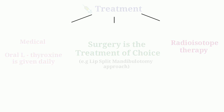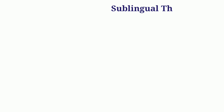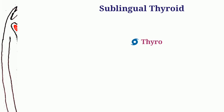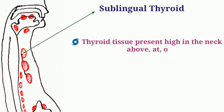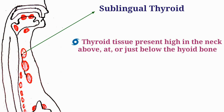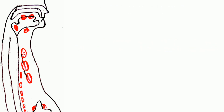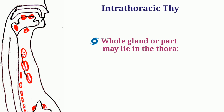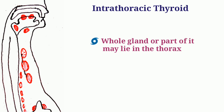Moving to other types: sublingual thyroid is thyroid tissue present high in the neck, above, at, or just below the hyoid bone. Sometimes the whole gland or part of it may lie in the thorax — this is called intrathoracic thyroid.